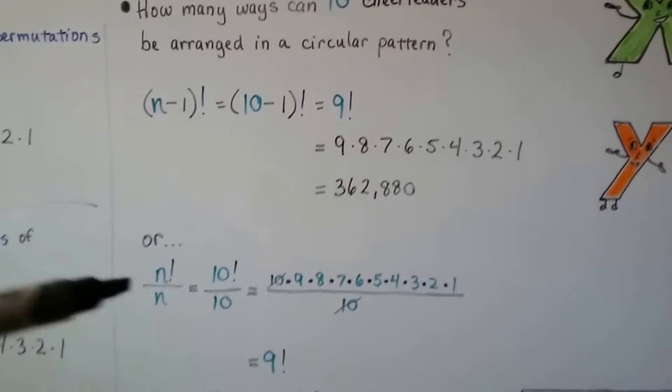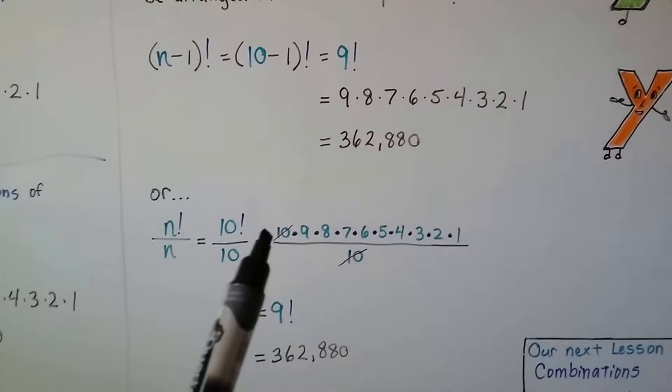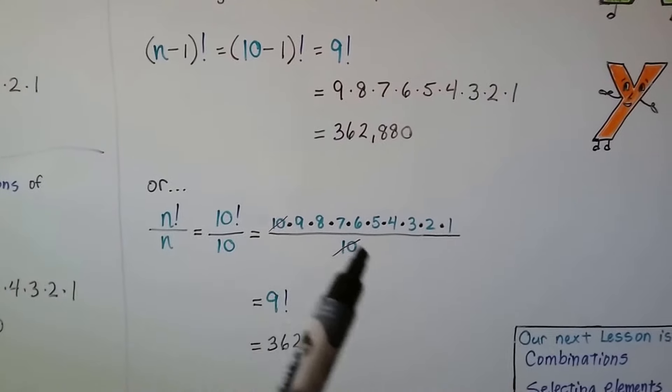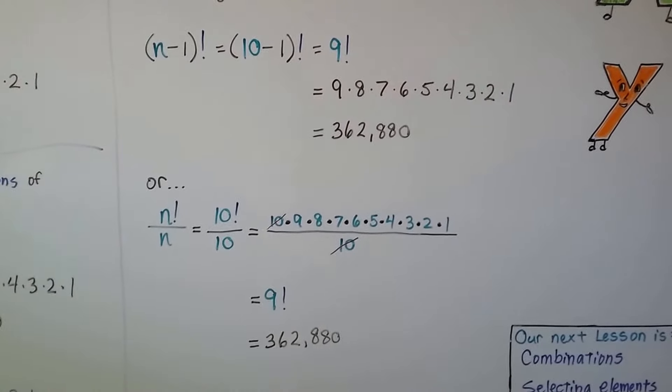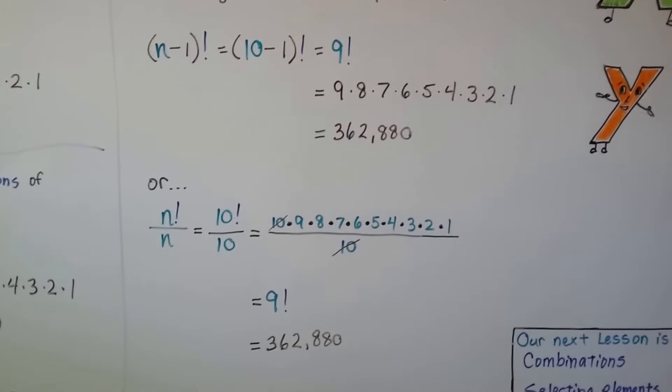If we did it this way, we'd have 10 factorial over 10. When we expand the top, we can cancel out these two 10s and end up with 9 factorial, which gives us the same amount, 362,880.